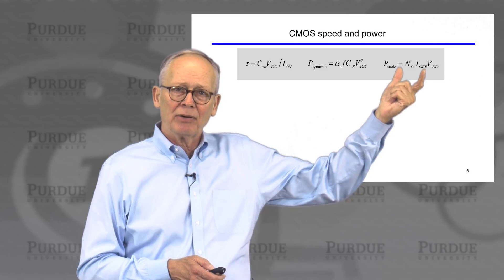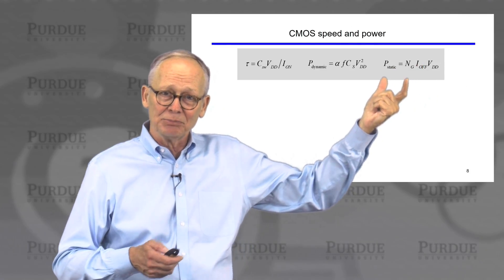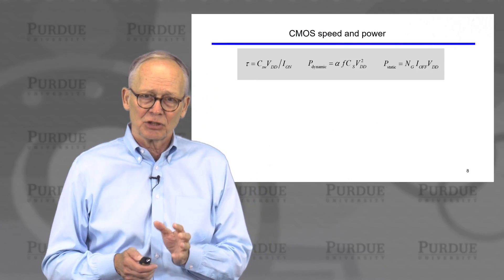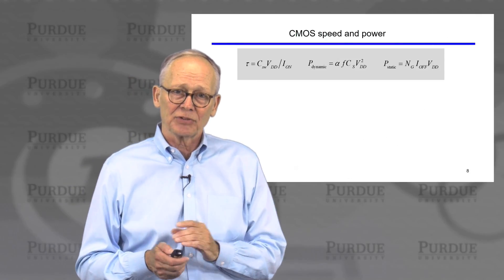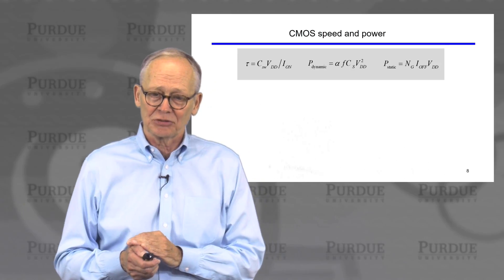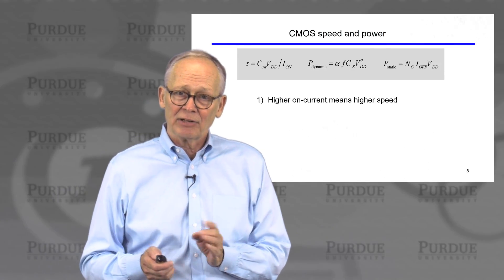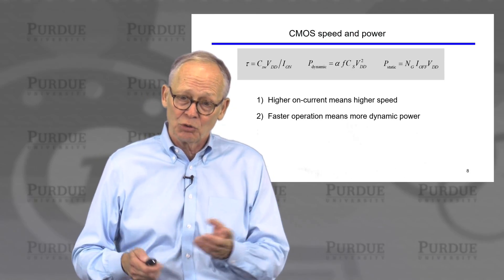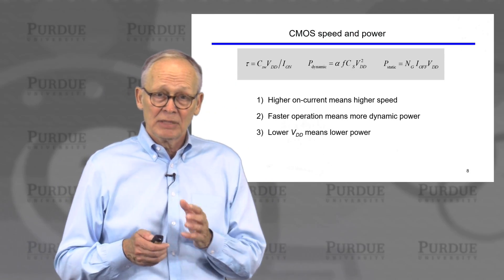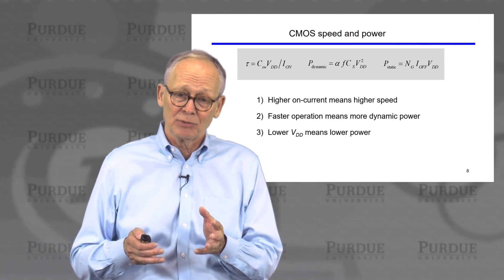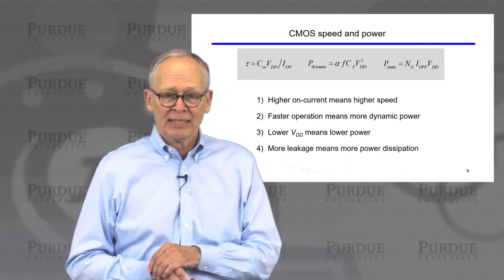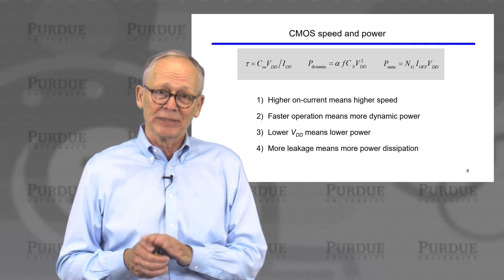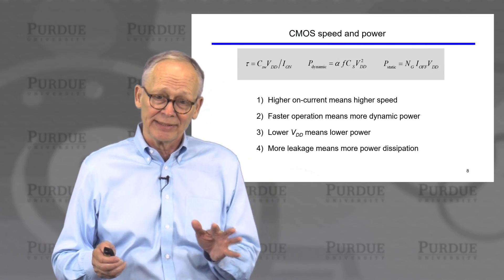In the static power, the standby power, when the circuit isn't doing any computing or the gates aren't switching, is determined by the leakage current or the off-current of the device when current is not supposed to be flowing. Higher on-current means higher speed. Faster operation means we consume more power. If we can do that at a lower power supply voltage, it means we consume less power. And more leakage is not desirable because more leakage means we dissipate more power when we're doing nothing.